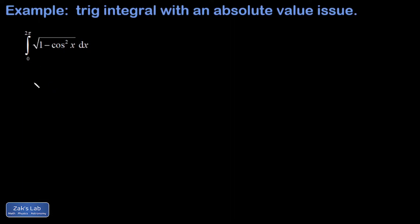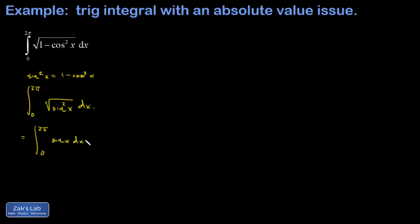To begin, we apply the identity sin²x = 1 − cos²x, which means the inside of the square root reduces to the square of the sine function. Proceeding naively, we could just say the square root undoes the squaring function — and I'm working through it this way to illustrate how it gets us into trouble to be that casual about the square root of a square.